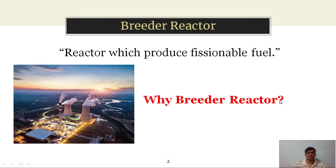Why is the breeder reactor so important? Generally, a light water reactor uses around 3.3% enriched uranium, which is insufficient and wasteful. To get 1 tonne of 1.3% enriched uranium, around 6 tons of natural uranium is needed. Using a fast breeder reactor, we can get around 100 times more energy than normal uranium via a light water reactor, and it also manufactures more fissile materials like plutonium-239 or uranium-235.